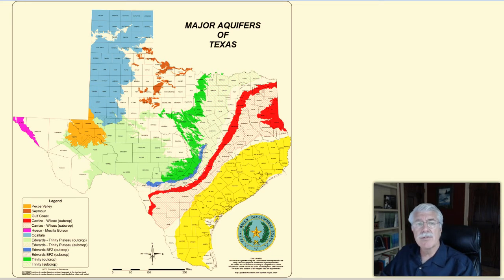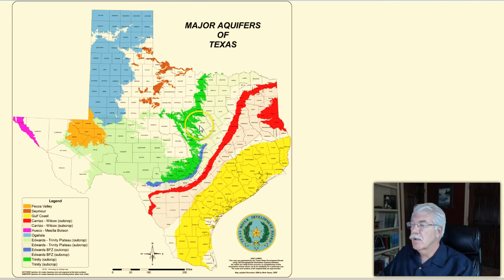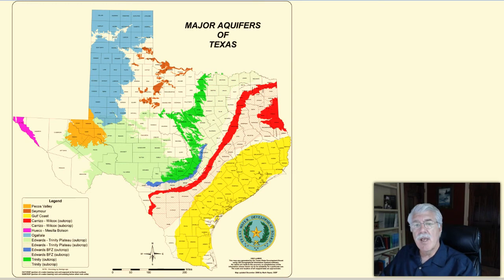The groundwater in some aquifers can be ancient. The Ogallala Aquifer was formed about 2 to 6 million years ago. Groundwater can also be very new. Water that falls as rain enters the Edwards Aquifer near San Marcos, for example, can be found emerging from springs just a few days or even hours later. Parts of the Edwards Aquifer are like a giant underground cave system, and groundwater can flow like a river through large openings in the underground limestone and marble rock that forms this aquifer.